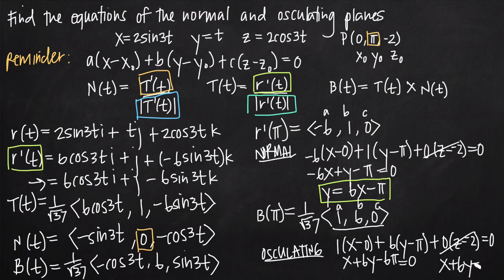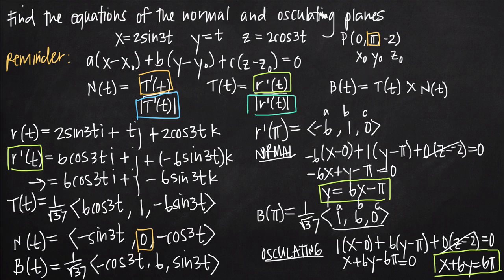The equation of the osculating plane is: 1(x − 0) + 6(y − π) + 0(z − (−2)) = 0, giving x + 6y − 6π = 0, or x + 6y = 6π. That's how you use the unit tangent, unit normal, and binormal vectors to find the equations of the normal and osculating planes of a vector function.